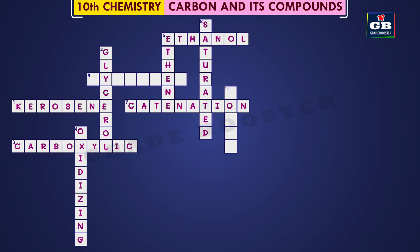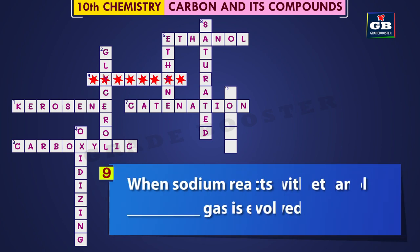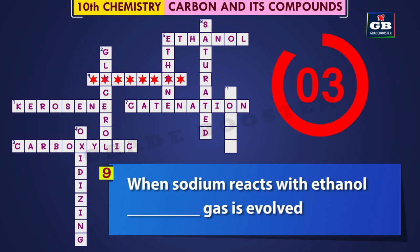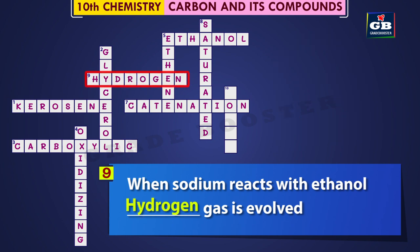9 Across: When sodium reacts with ethanol, dash gas is evolved. Do you know the answer? It is hydrogen. When sodium reacts with ethanol, hydrogen gas is evolved.